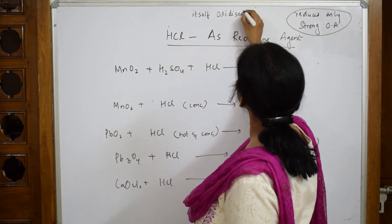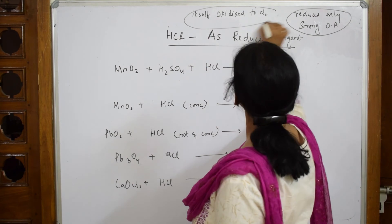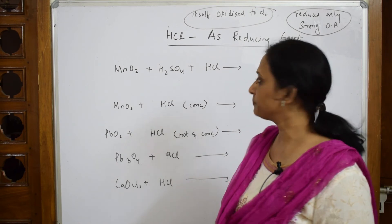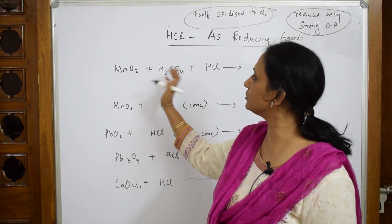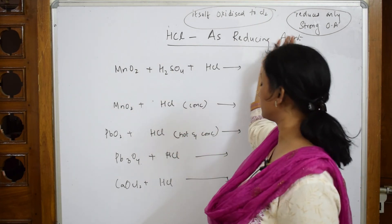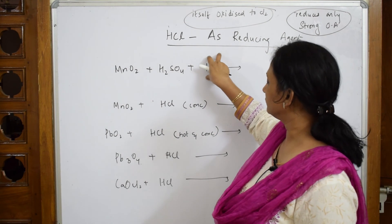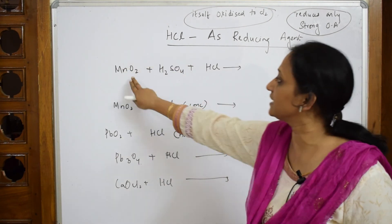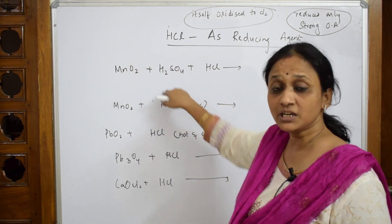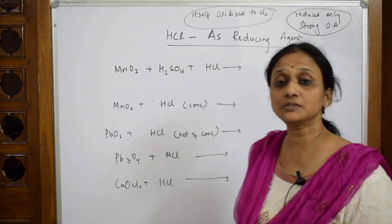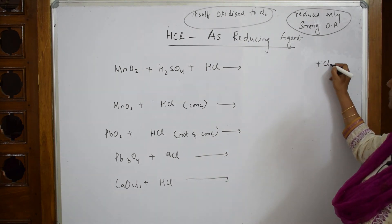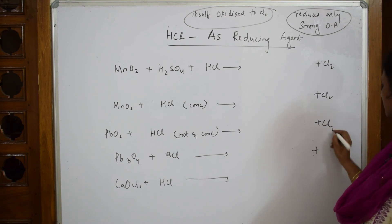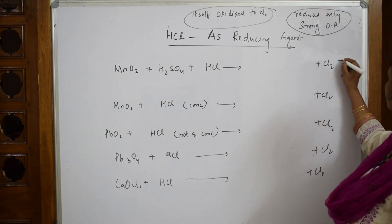Whenever you have HCl in the reaction, the byproduct should be compulsory chlorine. That's important. HCl gets oxidized to chlorine gas and the other strong oxidizing agents, they are going to get reduced to the respective salts. Let's see, everywhere you are supposed to write chlorine because HCl gets oxidized to chlorine, very important component Cl2 is everywhere.